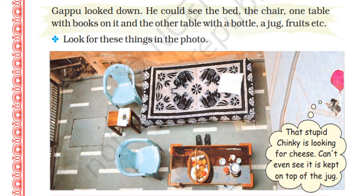Gappu looked down. He could see the bed, the chair, one table with books on it and another table with a bottle, a jug, fruits, etc. Observe the things in the photo. Here we have a bed with a pillow and two chairs. We have one chair, one table with some books, and on another table a fruit basket and one jug.